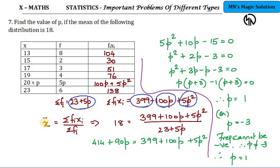So now we know that x bar is equal to sigma fi xi divided by sigma fi is our formula. And the question gives x bar as 18. So I use that: 18 is equal to sigma fi xi, these three terms, divided by sigma fi, which is these two terms. Cross multiply in this step. So 23 into 18 is 414, 5p into 18 is 90p equals these terms.